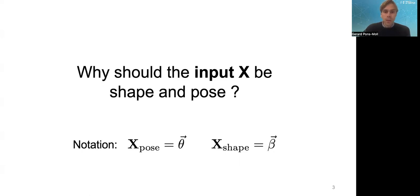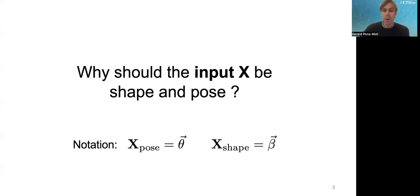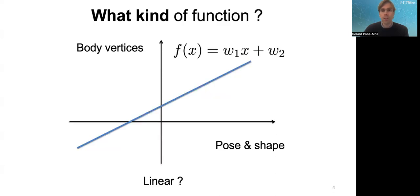In this lecture we use θ (theta) as a vector to denote pose parameters and β (beta) as a vector to denote shape parameters. You'll see many papers using this convention — it comes from the early SCAPE model, and following papers have continued using it. Now that we believe pose and shape are good parameters, the question is: what kind of function should we learn?